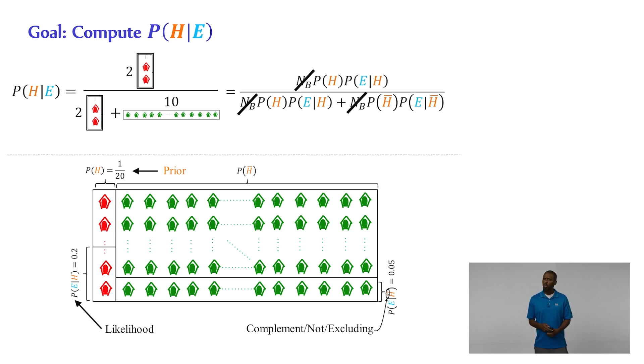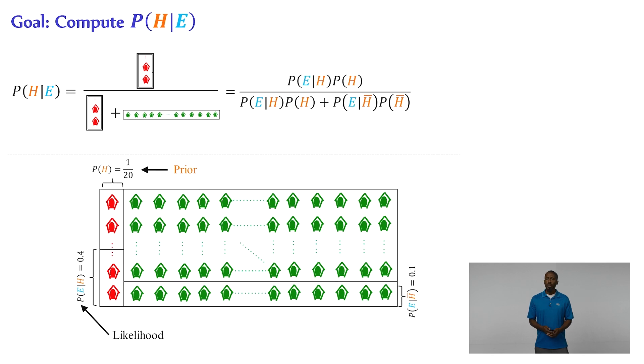Now notice that the total number of buildings cancels out, which makes sense because we chose an arbitrary number of buildings in our neighborhood for the sake of illustration. What we are left with now is a more abstract equation that is based purely on probabilities or Bayes theorem.